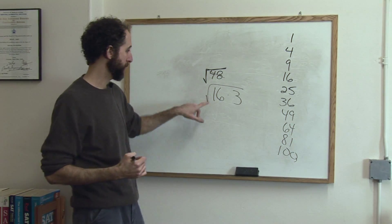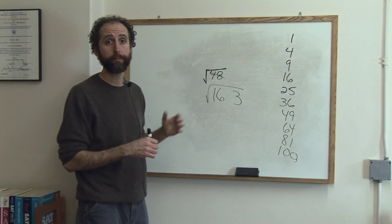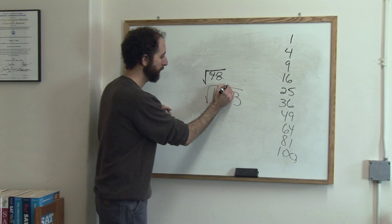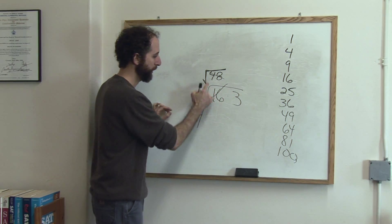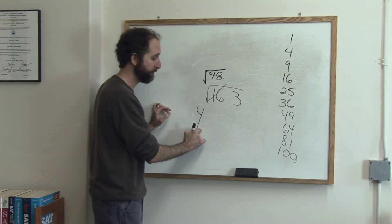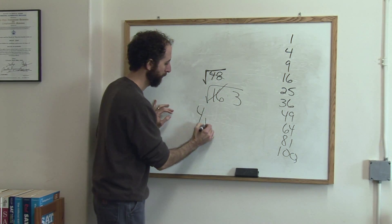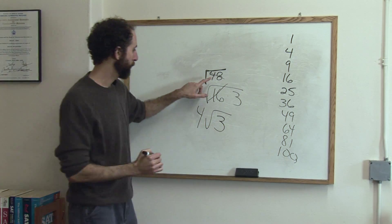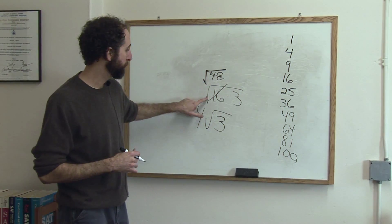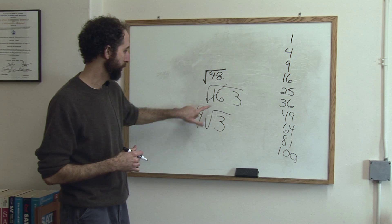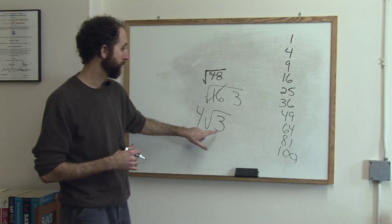The reason we did that is because square root of 16 is a perfect square. So square root of 16 is 4. You take the 16 out of the square root and it becomes 4 on its own. Not underneath the square root, but on its own. And the 3 is still there. So square root of 48, the root of 48 simplifies to be 4, which is the square root of 16, times square root of 3.